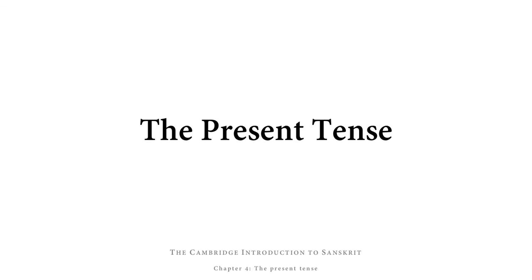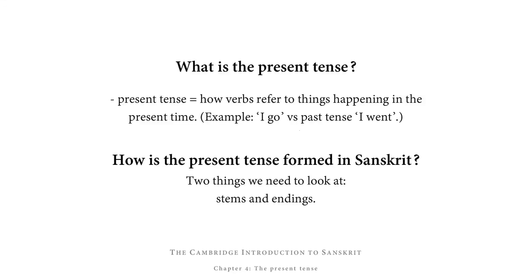Welcome to the video for the fourth chapter of the Cambridge Introduction to Sanskrit, which is going to teach you about the present tense. The present tense is how verbs refer to things that are happening at the present time. So for example, English 'I go' is present tense, whereas 'I went' would be past tense.